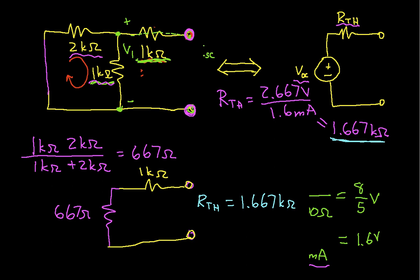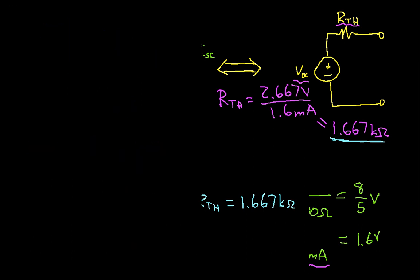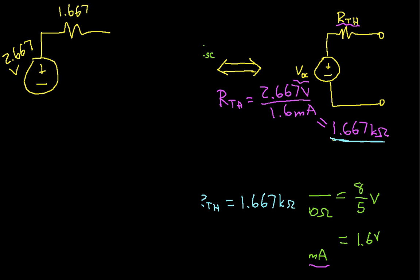That concludes this example. To summarize: the original circuit can be replaced by a single voltage source of 2.667 volts and a single resistor of 1.667 k ohms in series. This Thevenin equivalent is electrically equivalent to the original network. Thanks for watching.